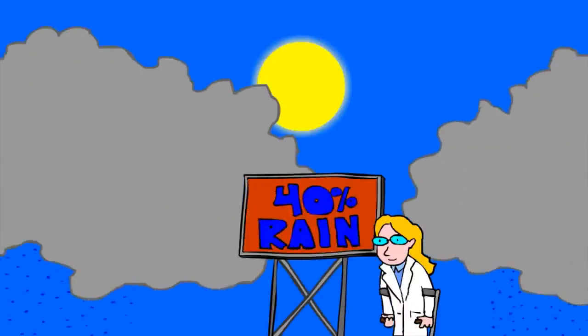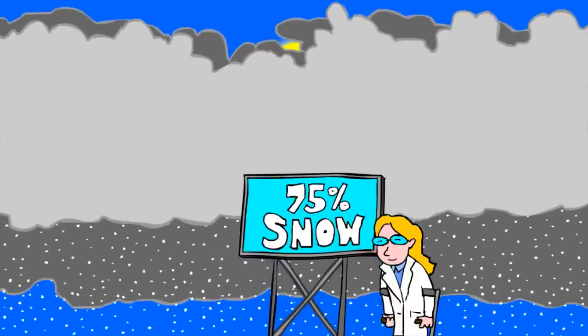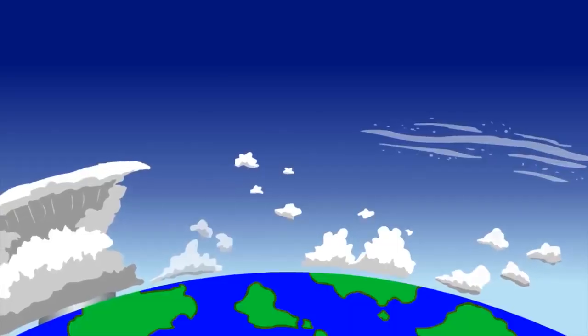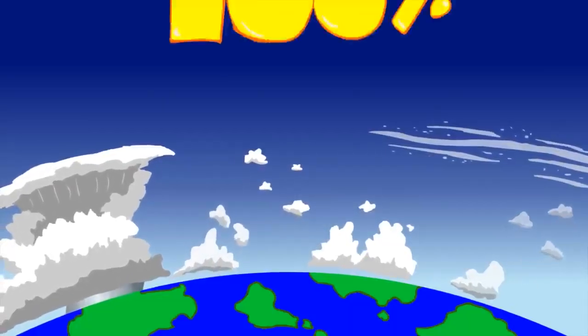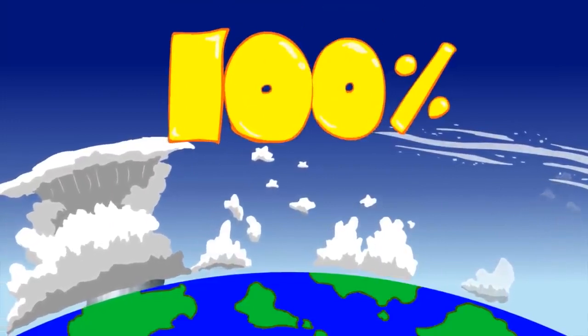40% chance of rain? 75% chance of snow? This is because conditions in our atmosphere are constantly changing, because it is part of a complex system. 100% certainty is not in science's nature.